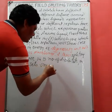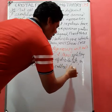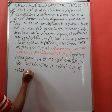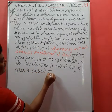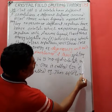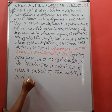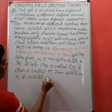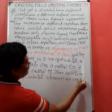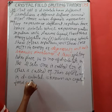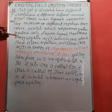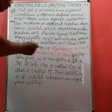One set is called t2g and the other is called eg. This splitting in d orbitals is known as Crystal Field Splitting, and the theory is known as Crystal Field Splitting Theory.